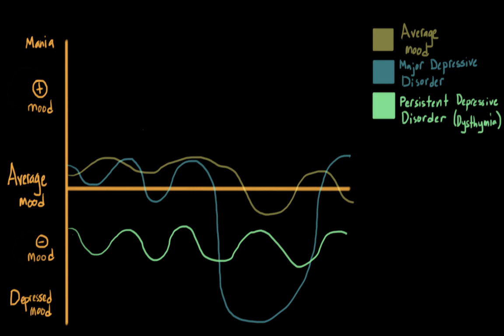Just to be clear, the symptoms for major depressive disorder and persistent depressive disorder are the same. But instead of lasting two or more weeks like major depressive disorder, for PDD the symptoms must last consistently for two or more years.